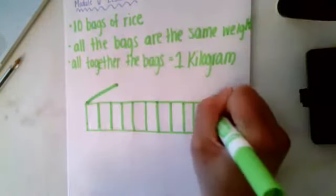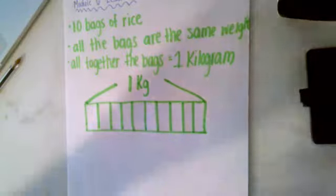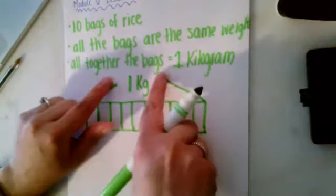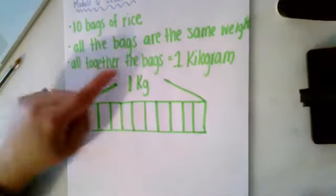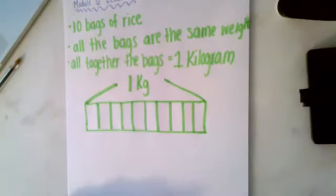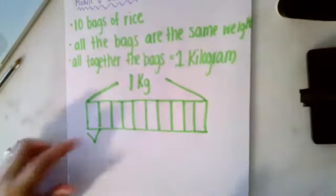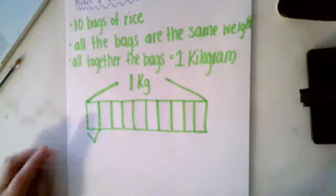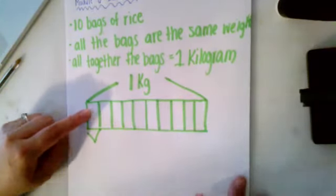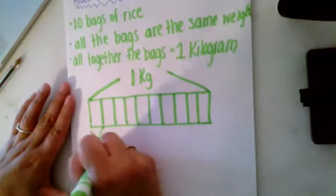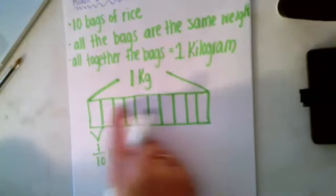Now I'm going to label this as one kilogram or one kg. Think about this for a second: why am I labeling these 10 bags as one kilogram? If you said it was because altogether the bags equal one kilogram, then you are right. I want to know what does one bag equal. I know 10 bags equal one kilogram, but what does one bag equal? Well, one bag is one out of 10 bags, so one bag would equal one-tenth kilogram. If one kilogram equals 10 bags, or 10 out of 10, then one bag would equal one-tenth kilogram.